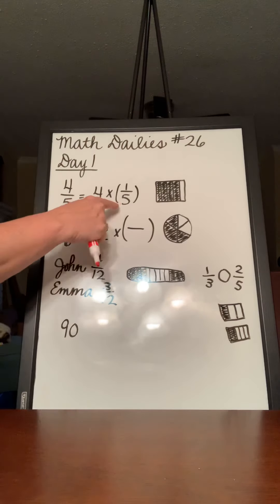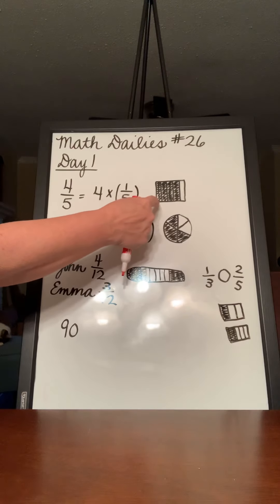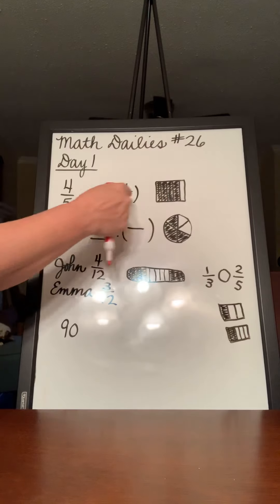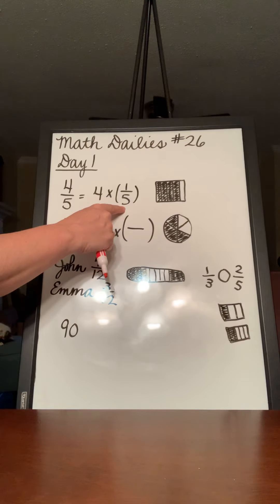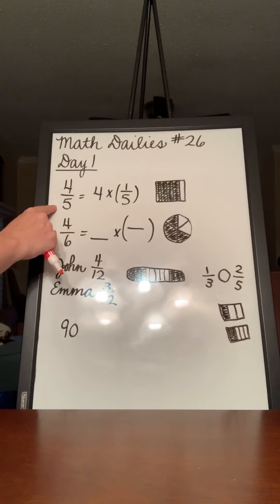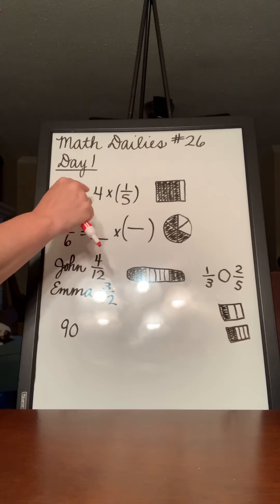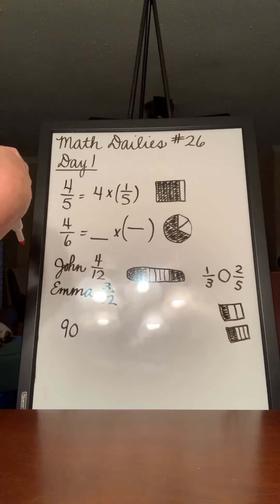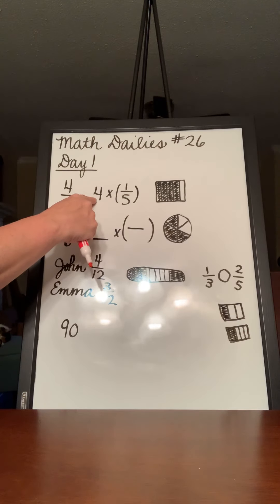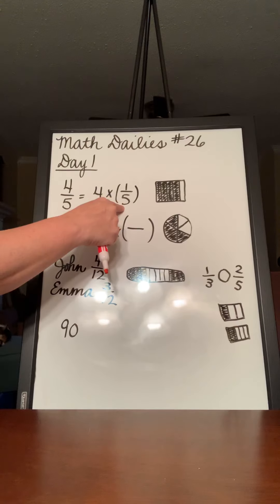And if we wanted to see how many 1 fifths that was, we could count. There's 1, 2, 3, 4, because each of those is 1 fifth. So 4 one-fifths equals 4 fifths. But you're basically just multiplying 4 times 1 and keeping your denominator.